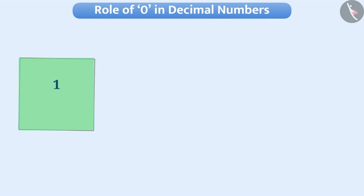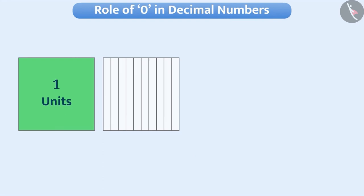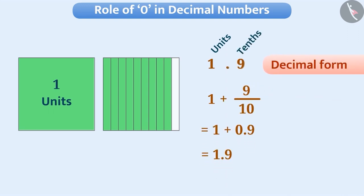Similarly, if one whole square is taken and another square is divided into ten equal parts and nine parts taken from it, then we can say that along with one unit, there are 9 tenths, which is represented in decimal form as 1.9.